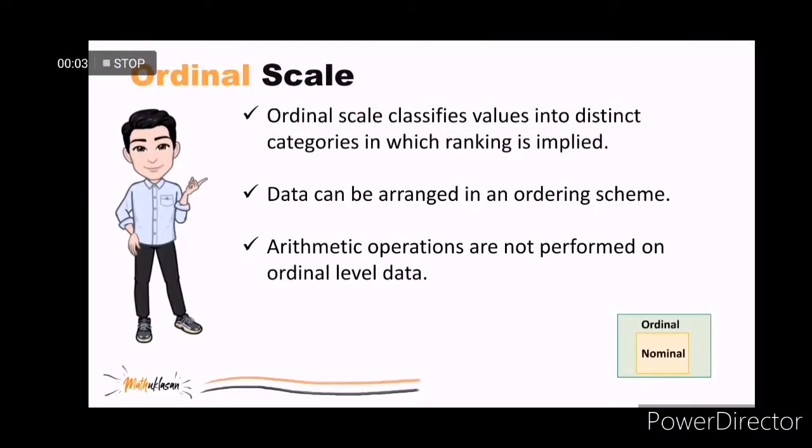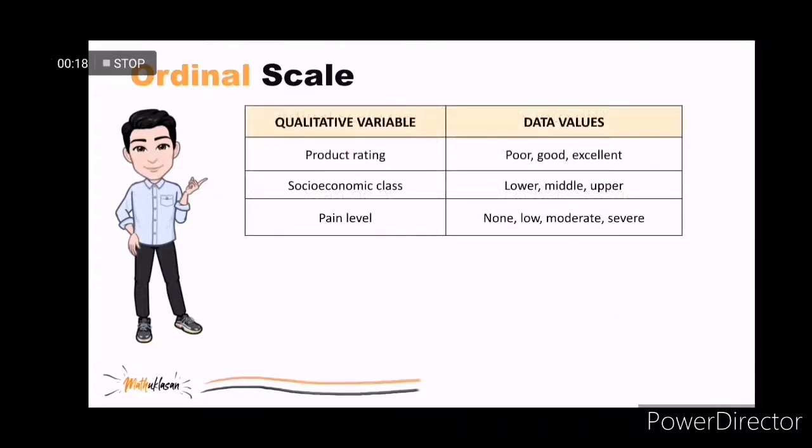The scale of measurement for a variable is called an ordinal scale if the data exhibit the properties of nominal data and the order or rank of the data is meaningful, though arithmetic operation is still not possible. Examples are product rating, socioeconomic class, and pain level.